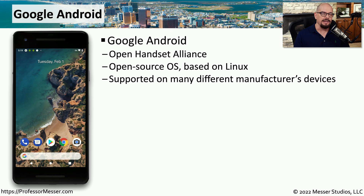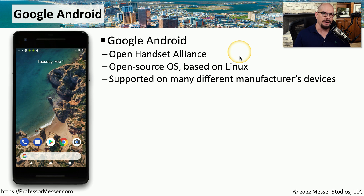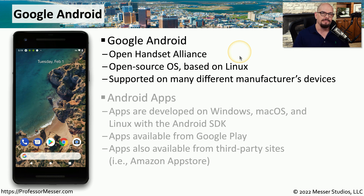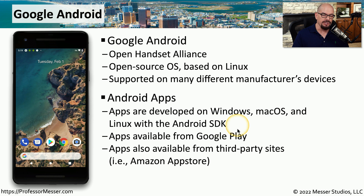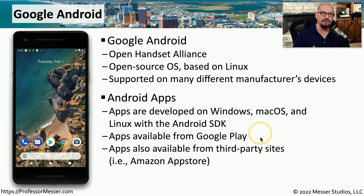The other big phone-based operating system is Google's Android OS. This is from the Open Handset Alliance, and it's an open source operating system based on Linux. It's supported on many manufacturers' hardware, so you can find exactly the phone with the features you'd like and use the Android operating system on it. There's an Android SDK, or software developers kit, that allows you to write Android apps in Windows, macOS, and Linux. You would then download those apps from the Google Play Store, and there are a number of third-party sites like the Amazon App Store that can also provide Android-based apps.